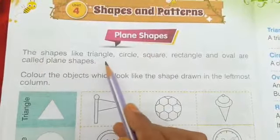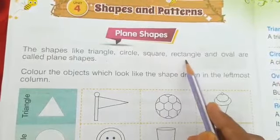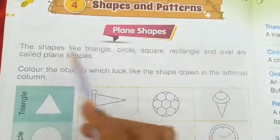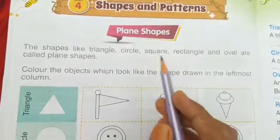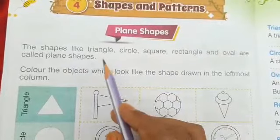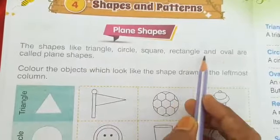The shapes like triangle, circle, square, rectangle, and oval are called plane shapes. These are the plane shapes: triangle, circle, square, rectangle, and oval.